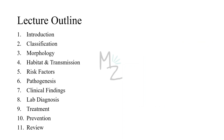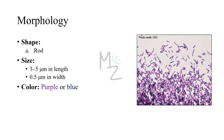The lecture outline covers: introduction, classification, morphology, habitat and transmission, risk factors, pathogenesis, clinical findings, lab diagnosis, treatment, prevention, and a final review. Starting with morphology — this bacterium is rod-shaped, somewhat elongated and rectangular.